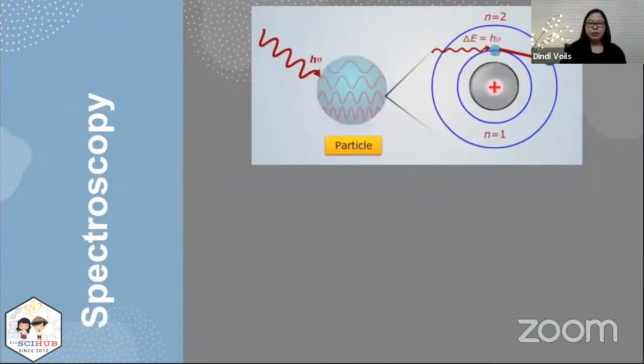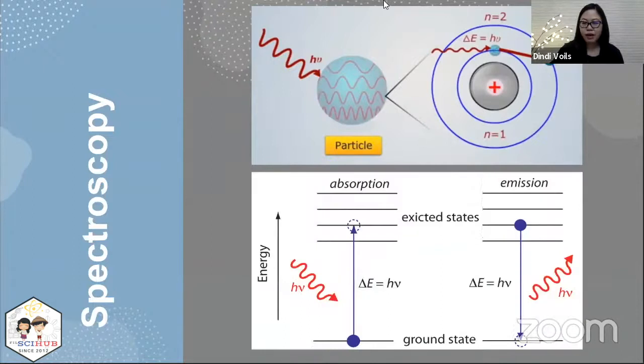So in spectroscopy, just like what I mentioned, the particle interacts with an electromagnetic radiation. And when it happens, something happens with the particle. And it's best described using an energy level diagram.